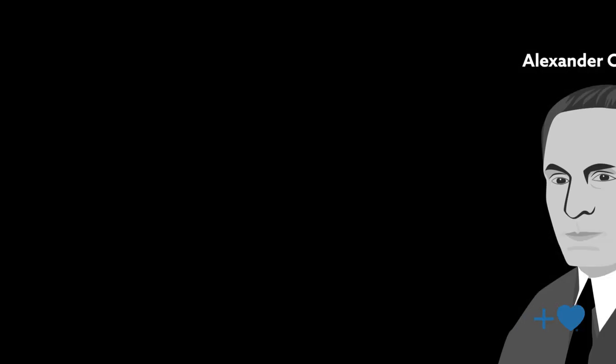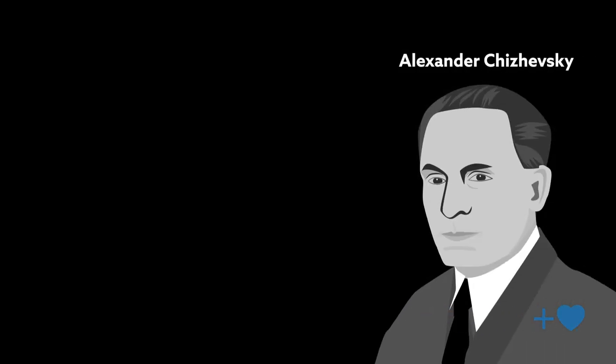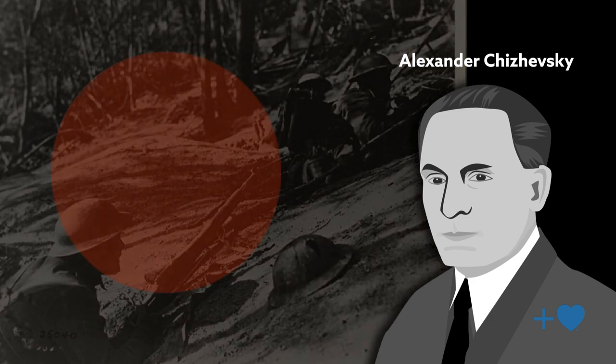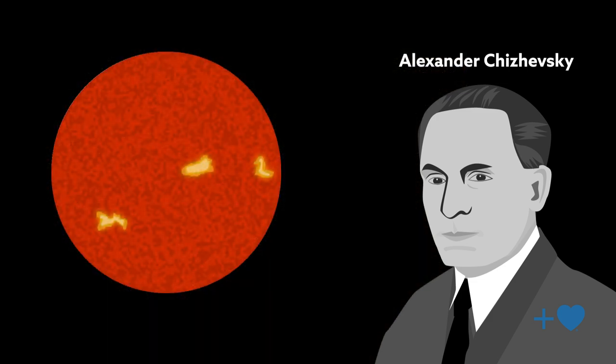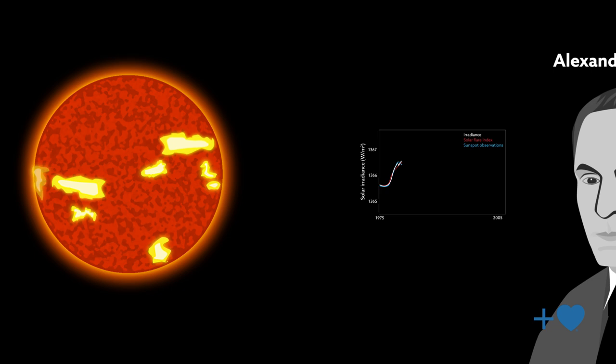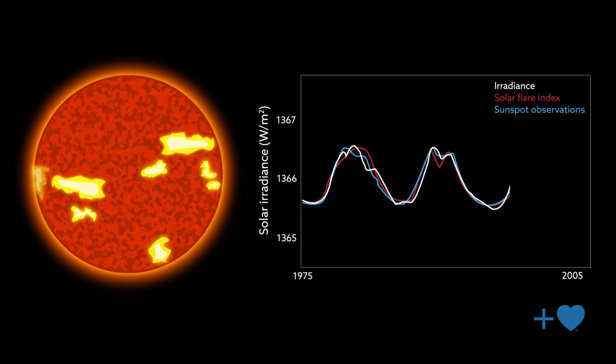The work builds on observations made by the famed astronomer Alexander Chizhevsky during World War I. He noted that battles intensify during peak solar flare periods and that major human events and behaviors closely follow the cycle of the Sun, which led to the hypothesis that some unknown solar forces affect human health and behavior, providing a provocative link between events occurring in our solar system and life on Earth.